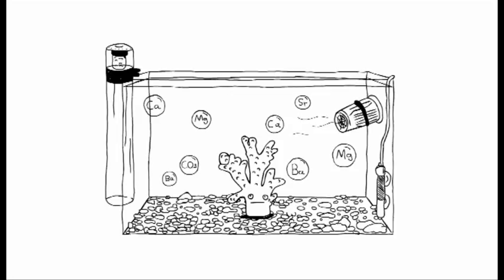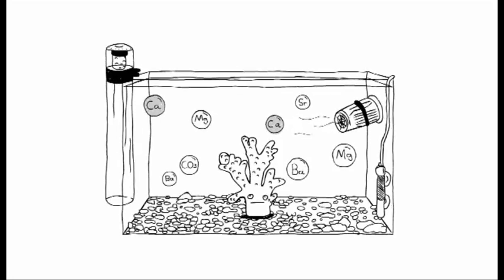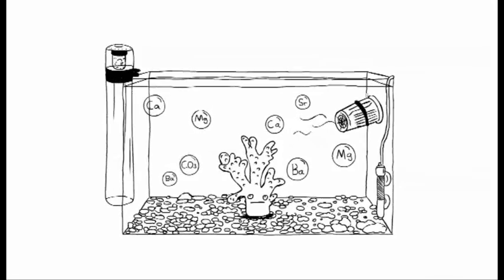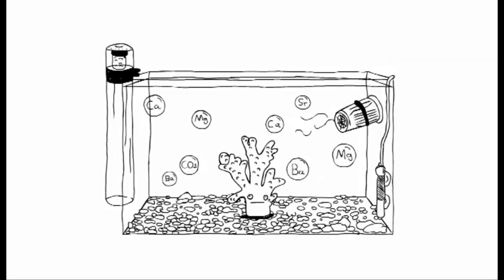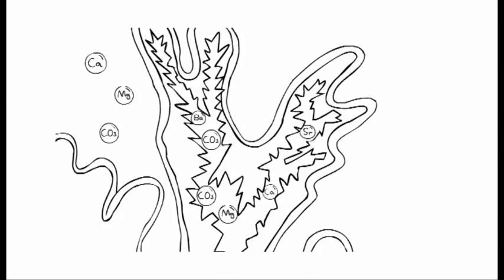The five foundation elements include the major elements calcium, magnesium, and carbonate, as well as the trace elements strontium and barium, that together are the basic building blocks of coral skeleton.